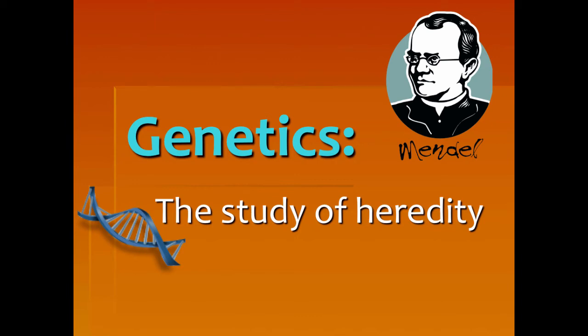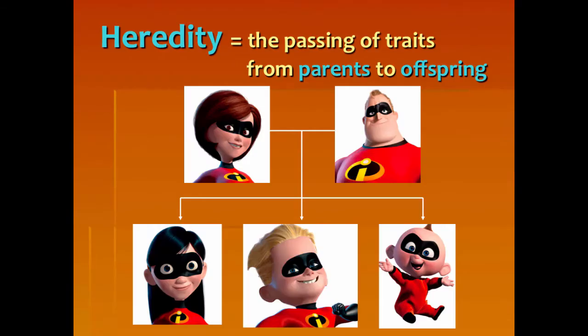Today we're going to start learning about genetics, and genetics is the study of heredity. When we talk about heredity, we need to talk about the passing of traits from parents to offspring. For this PowerPoint, we're going to use the Robbins family as an example. All of our DNA comes from our parents — exactly 50% from your mom and 50% from your dad. This is true for all offspring. So my question is: if you're exactly 50% your mom and 50% your dad, how come all siblings aren't identical?